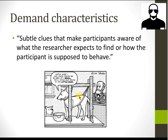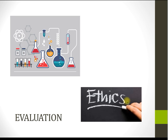Before we get into proper evaluation, I want to introduce a research methods concept: demand characteristics. These are subtle clues or cues that make participants aware of what the researcher expects to find, or how the participant is supposed to behave. It means the participant basically works out what the experiment is about and changes their behavior as a result. This is a problem because you're no longer observing objective, uninfluenced behavior — the participant is themselves influencing the experiment. Think about how demand characteristics might have occurred in Zimbardo's experiment.